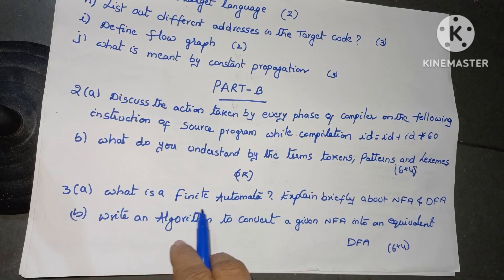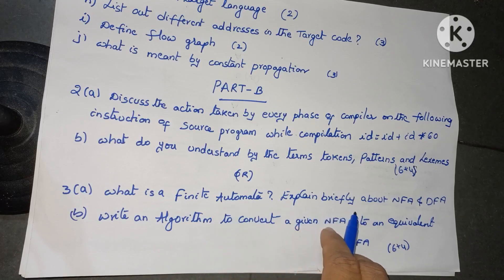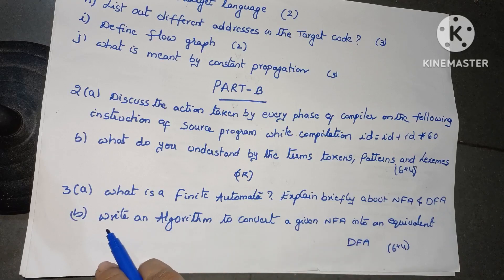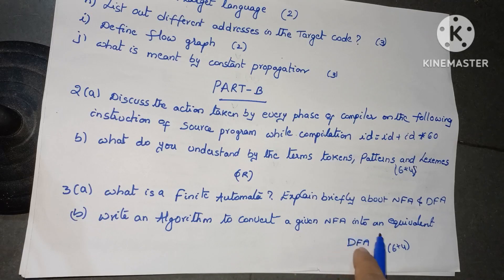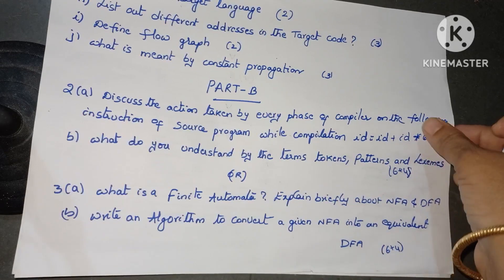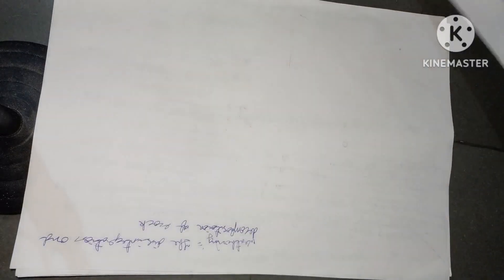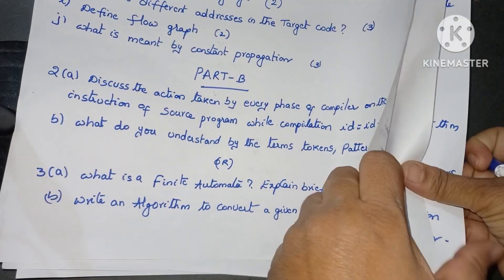Question 3A: what is finite automata? Explain briefly about NFA and DFA, for 6 marks. B bit: write an algorithm to convert a given NFA into an equivalent DFA, 4 marks. These are internal choice questions for a total of 10 marks.